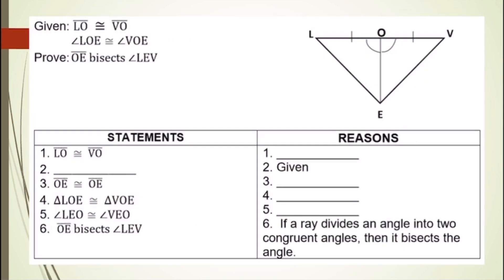Next, let's apply the missing information to complete the proof below. The given here is line segment LO is congruent to line segment VO, and angle LOE is congruent to angle VOE. Let's prove line segment OE bisects angle LEV. For our first statement, we have line segment LO is congruent to line segment VO. The reason for our first statement is: given.